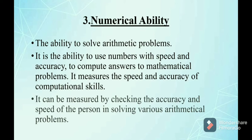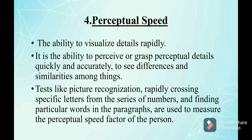The fourth primary mental ability is perceptual speed — the ability to visualize details rapidly. It is the ability to perceive or grasp perceptual details quickly and accurately, and to see differences and similarities among things. Tests like picture recognition, rapidly crossing specific letters from a series of numbers, and finding particular words in paragraphs are used to measure the perceptual speed factor.